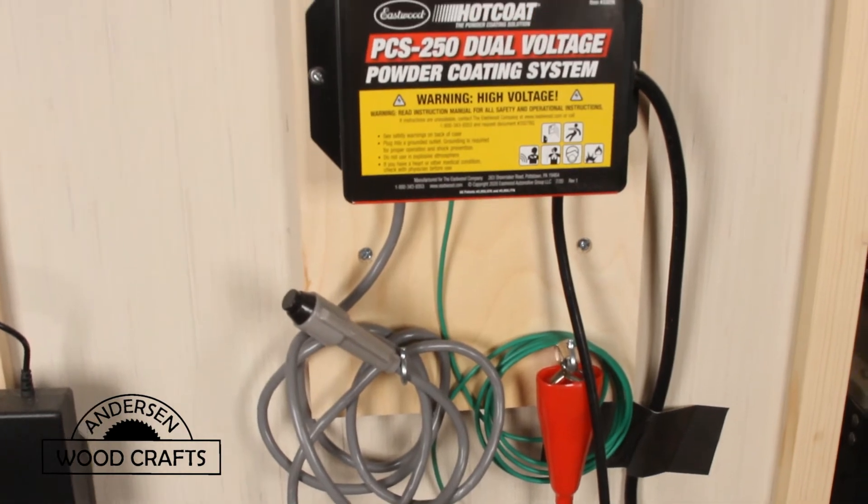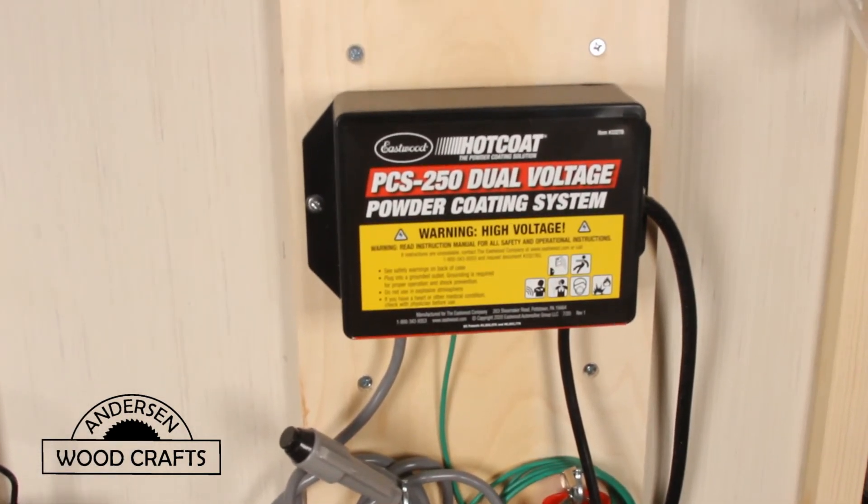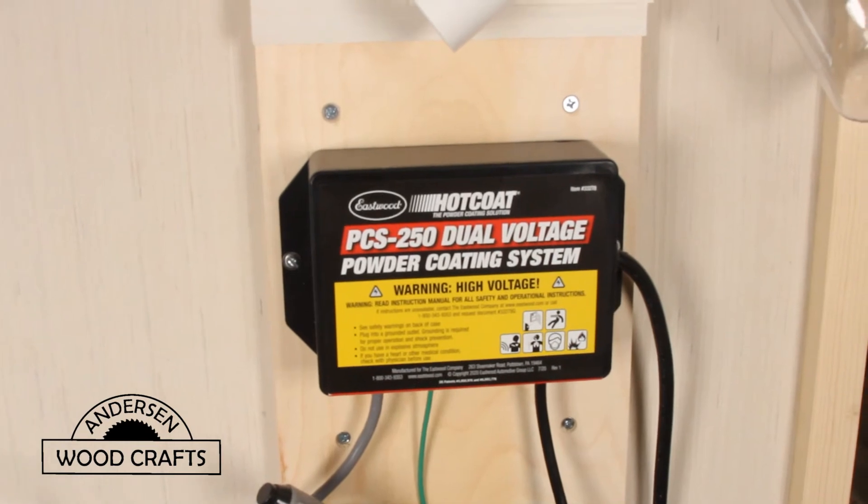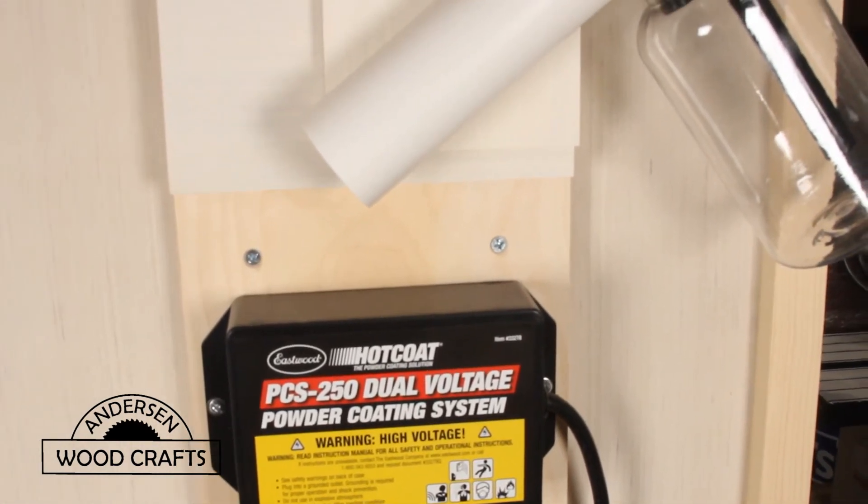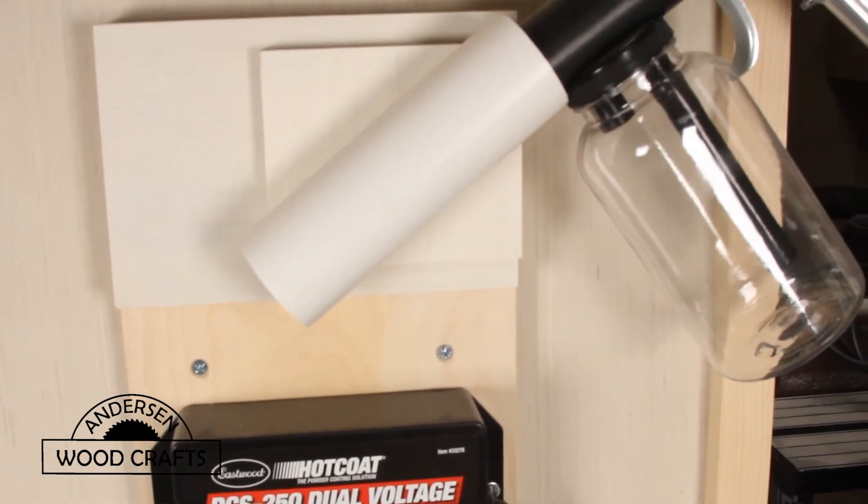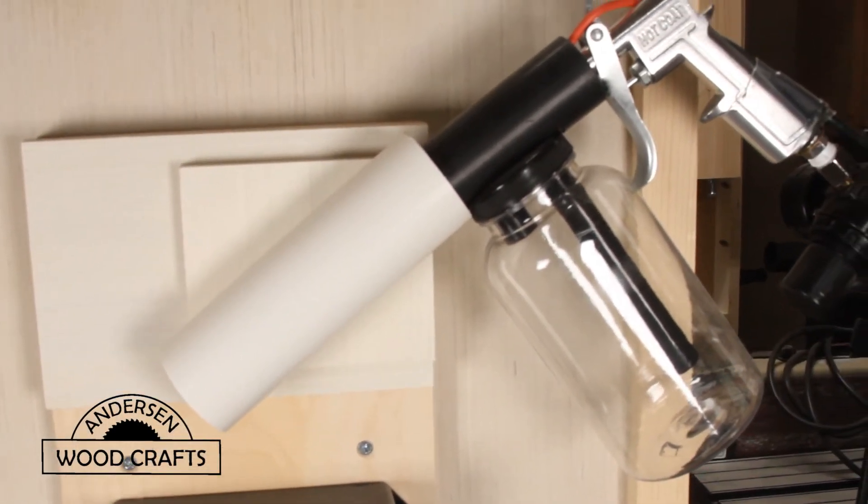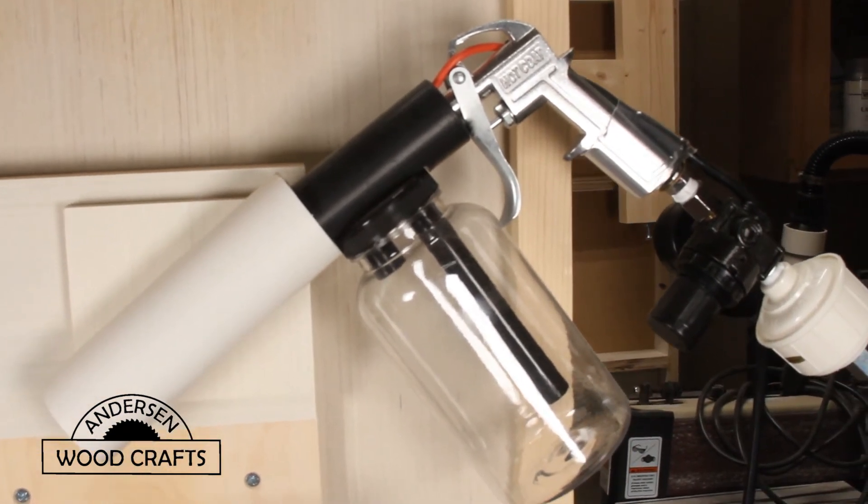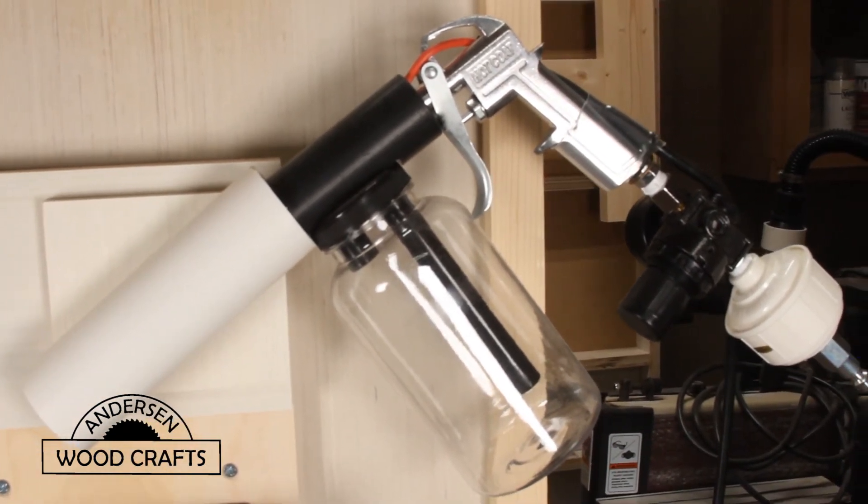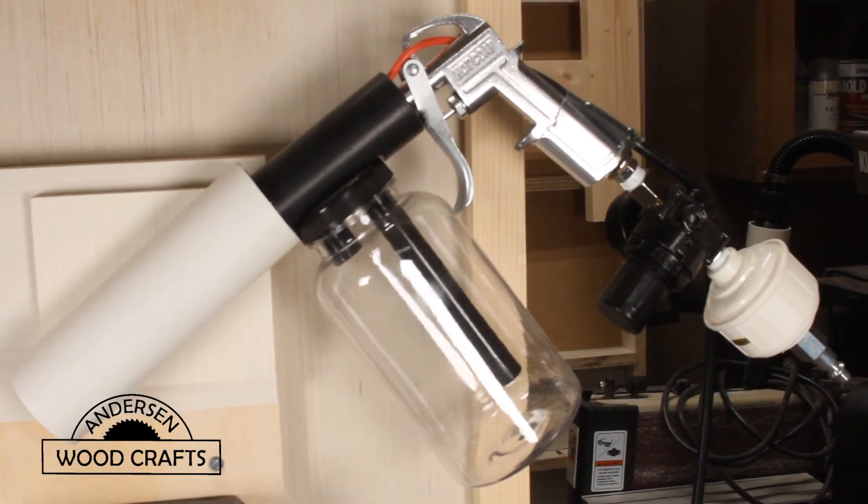And then I attached a powder coating control box to the side also. And then to store the powder coating gun, I just used a small piece of PVC pipe and it slides right in there. And I also have another air dryer and regulator on the end of the gun.